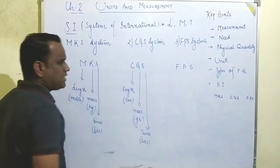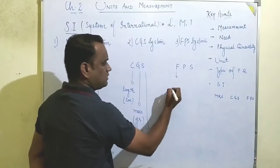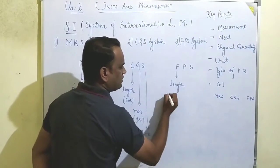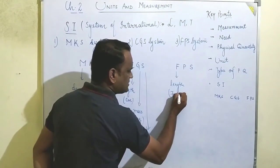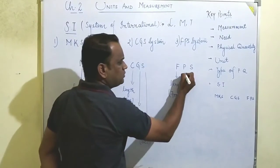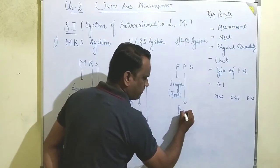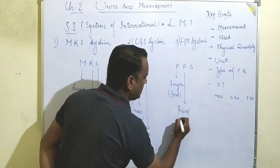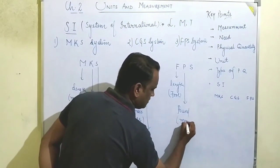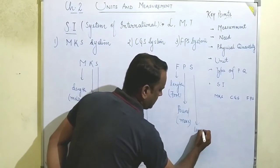And in the third one, the FPS system, length will be measured in foot — if it is singular that is foot, and if it is plural that will be feet. Mass is measured in pound, and time will be measured in second.